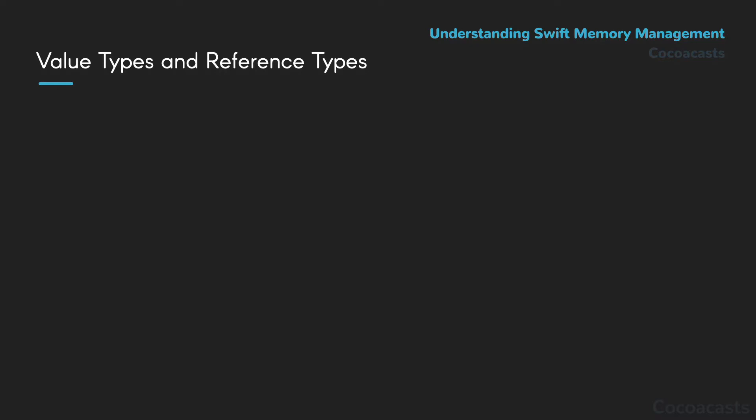The difference I would like to focus on today is how they are stored in memory. In this episode we explore how classes and structures differ in the context of memory management. While this may sound like an advanced topic, it certainly isn't. It is essential that you understand how value types and reference types behave in Swift.